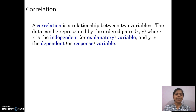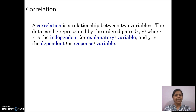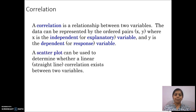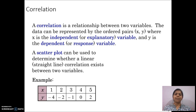Correlation is a relationship between two variables. The data can be represented by ordered pairs of X and Y, where X is independent, that is the predictor, and Y is the dependent or response variable. To represent correlation, we use a scatterplot, where the linear correlation between the variables can be shown.